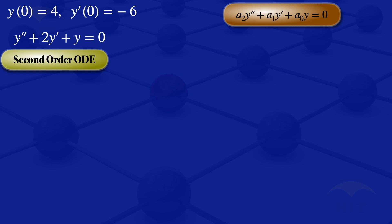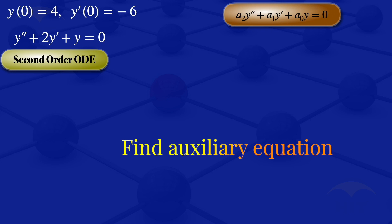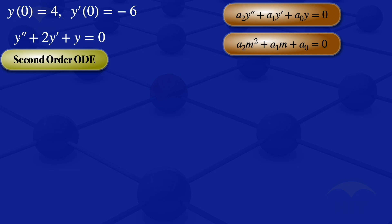To solve second-order ODEs with constant coefficients, we have to find the auxiliary equation. The auxiliary equation of an equation of this form is a2·m² plus a1·m plus a0 equals 0. The roots of the auxiliary equation determine the nature of the solution we get.